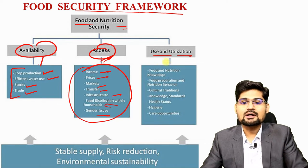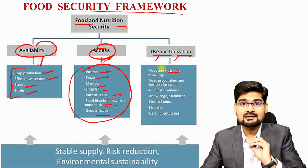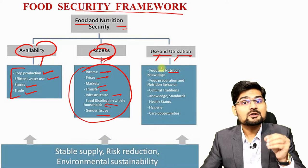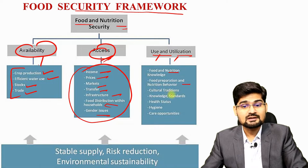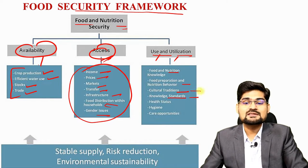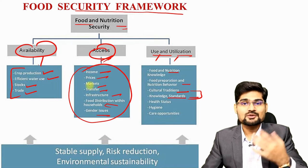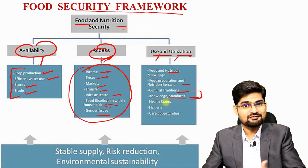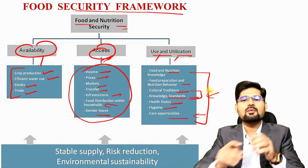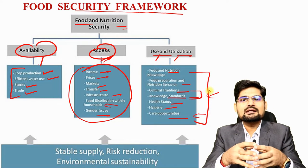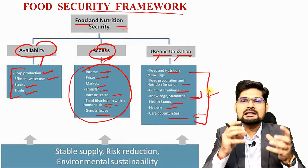Now comes utilization. Food nutrition knowledge and awareness about what food to intake is important. Just availability and affordability of food is not enough — knowing the nutritional value of food is also important. Food preparation and nutritional behavior, cultural traditions, knowledge standards, and indigenous knowledge in societies where food nutrition is still preserved — these are relevant. New technologies are bringing organic and healthy food options. However, health status, hygiene and care opportunities are still more prevalent in modern urban areas, and much work remains for rural areas.